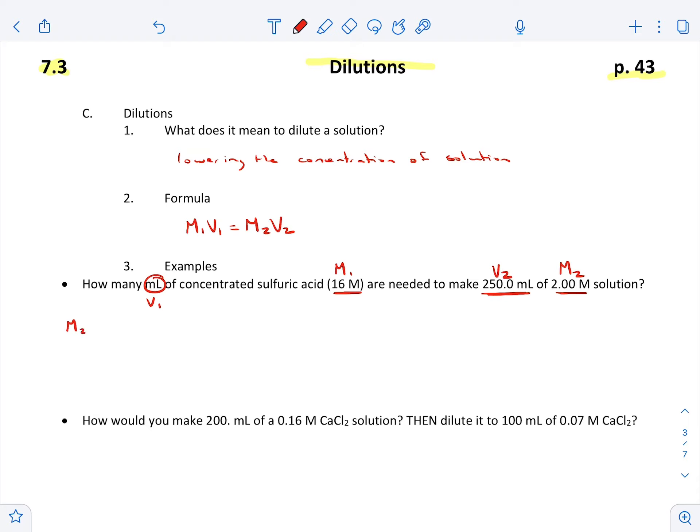All right, if we want to write it out to the side we're welcome to. I don't know why I wanted to start with M2, but we'll go back and start with M1. M1 is equal to 16 molar, V1 is our question mark, M2 is our 2.00 molar, and then V2 is our 250 milliliter.